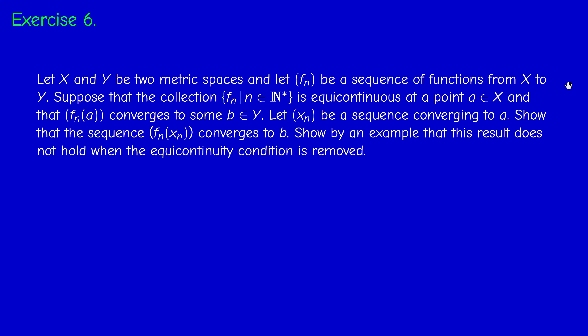Next exercise. We have two metric spaces X and Y, and a sequence of functions fₙ from X to Y. We assume that the collection of fₙ is equicontinuous at the point A, and that fₙ(A) converges to some element B. We have to prove that if xₙ is a sequence in X converging to A, then fₙ(xₙ) converges to B. This is not trivial.